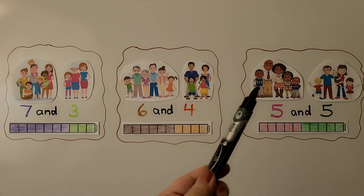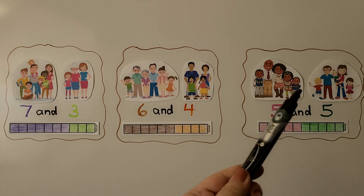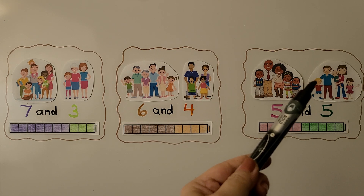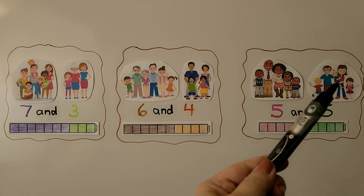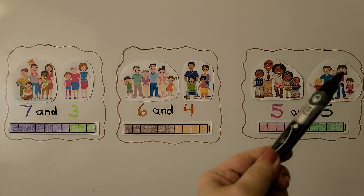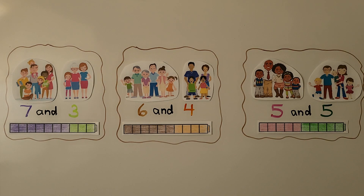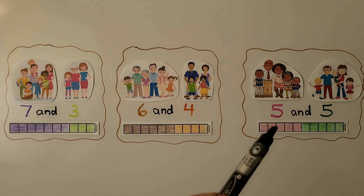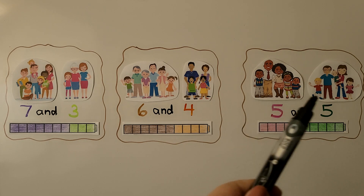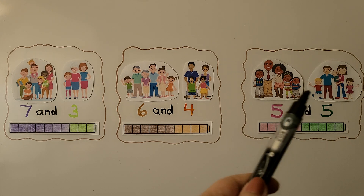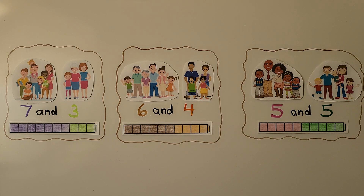Here we have one, two, three, four, five people in this family, and one, two, three, four, five people in this family. We have a five and a five. We can color five pink ones and five green ones to show ten people all together in these families.